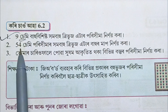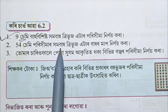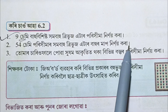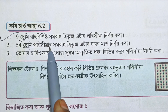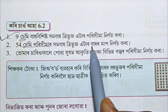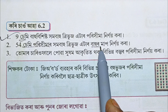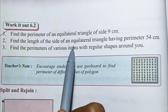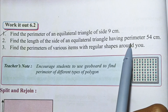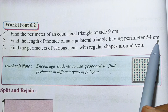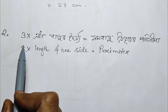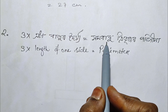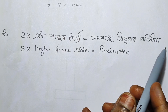Do number 2: Find the length of the side of an equilateral triangle having perimeter 54 cm. We know that perimeter equals 3 into the length of one side for an equilateral triangle.